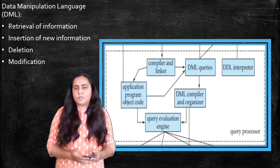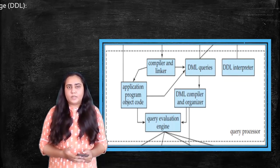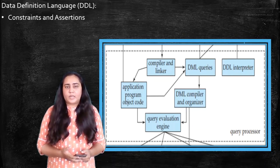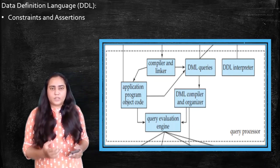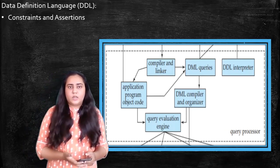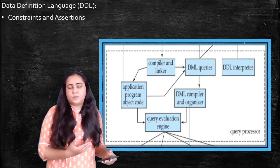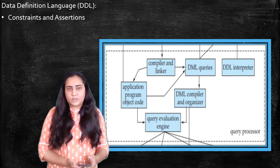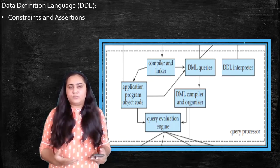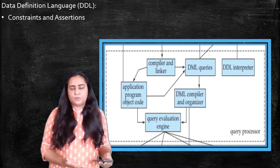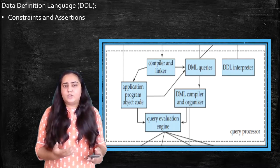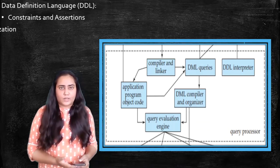The next thing you can see here is DDL. DDL stands for Data Definition Language and it deals with all the constraints and assertions when I talked about authorization and integrity, where there are some rules and regulations to be followed. So if you want to create these rules and regulations, then you would use the Data Definition Language.